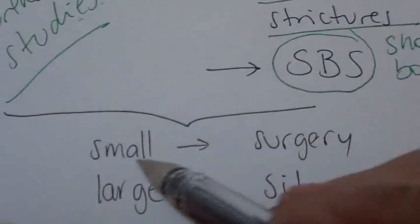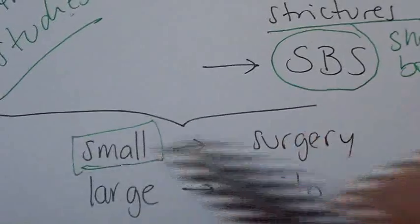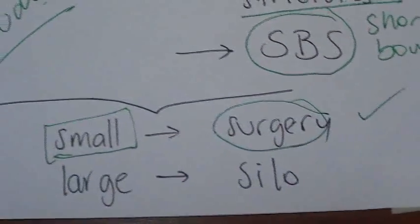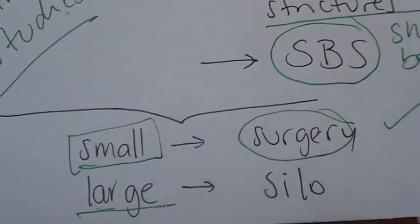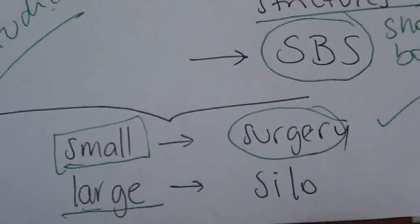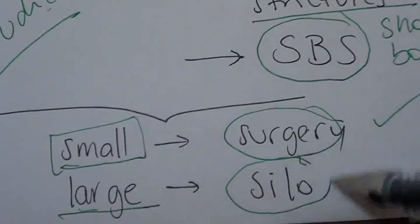And in both cases, if the lesion is small, they can go to surgery. They can go to surgery and repair the lesion. But if it's large, if it's really large, and the abdominal content outside the body is really large, you have to create a silo.